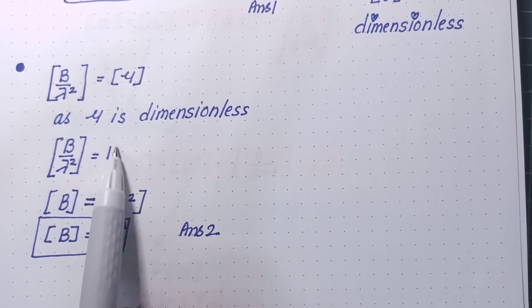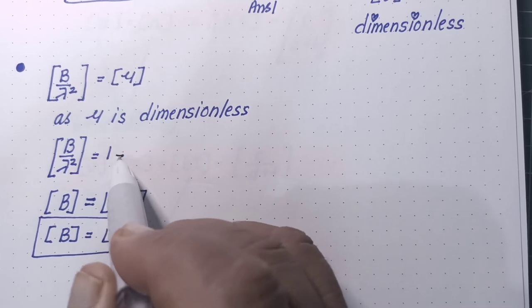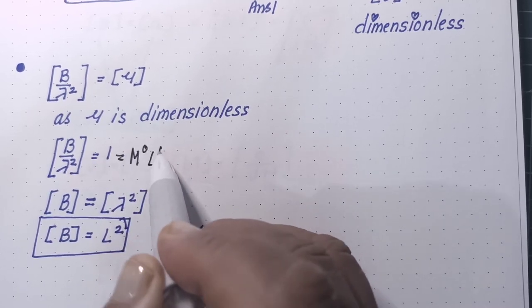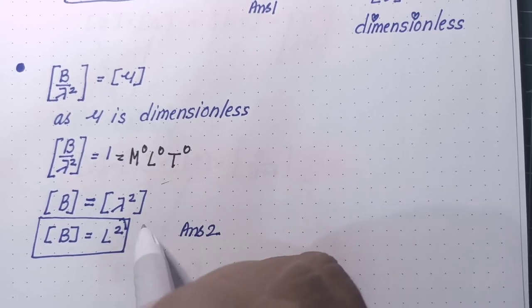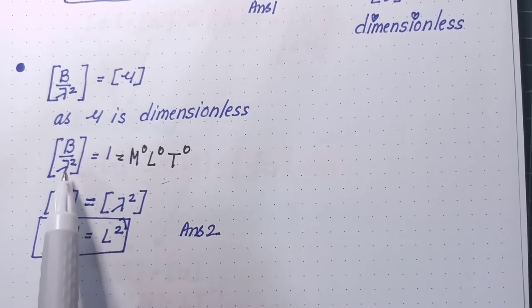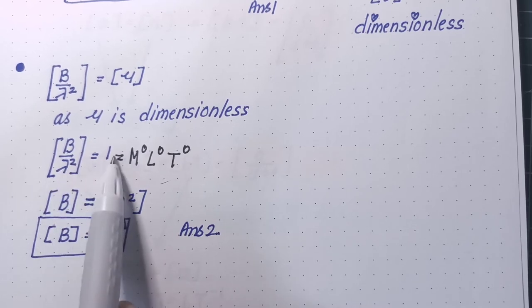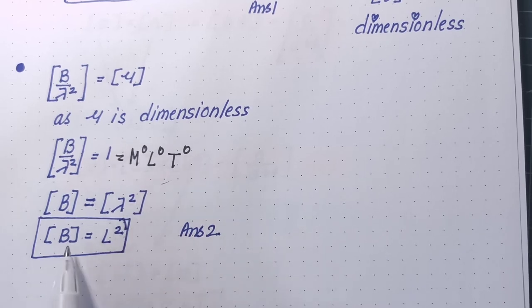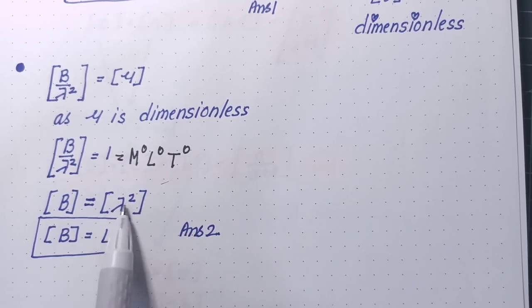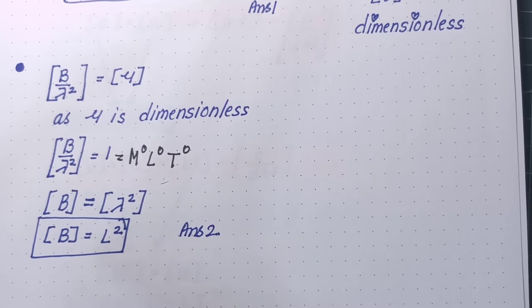That means M to the power 0, L to the power 0, T to the power 0, this is dimensionless. So dimension of B is equal to λ square ka dimension. Dimension of B should be equal to dimension of λ square, therefore λ is a length, so L². This is answer number 2. This was question number 4 of your exercise Newton physics.